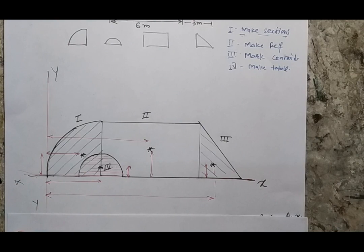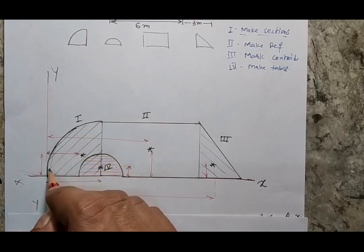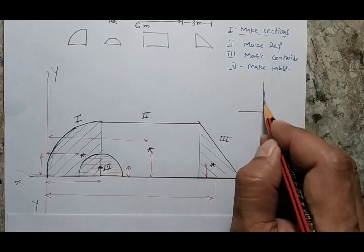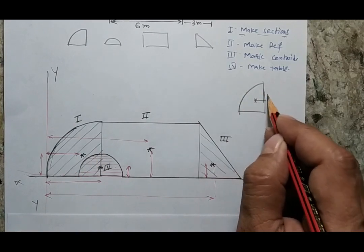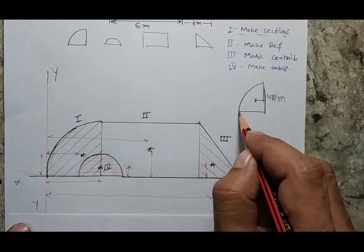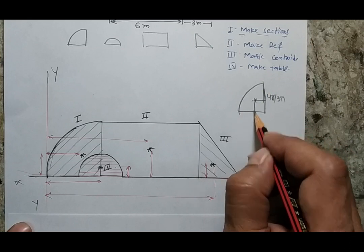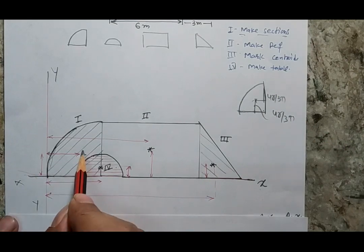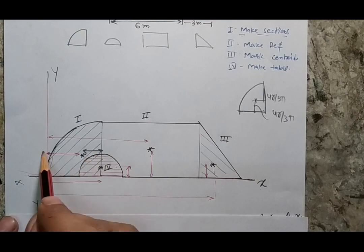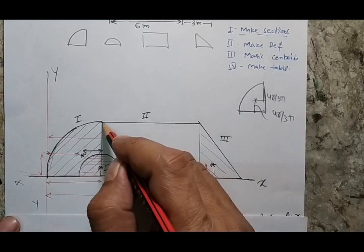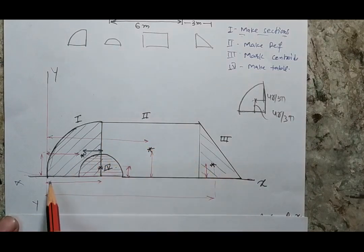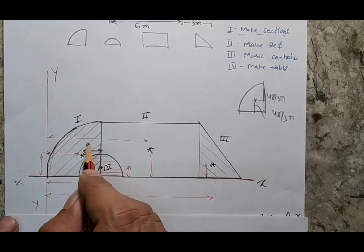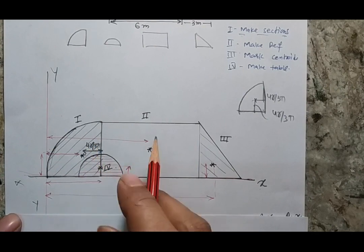My third job is to mark the centroid of each individual section. Let this semicircular arc be my section 1. In the case of a semicircular arc, the position of the centroid lies at a distance 4R/3π from the vertical diameter, as well as 4R/3π from the base. Please remember that this distance is defined from the vertical and bottom side of the semicircular arc.